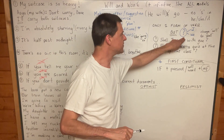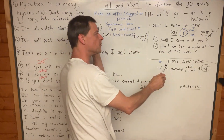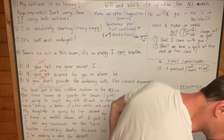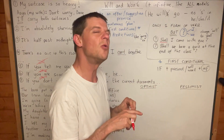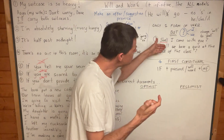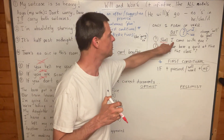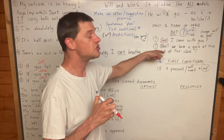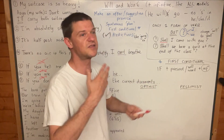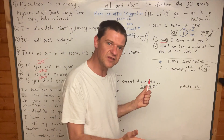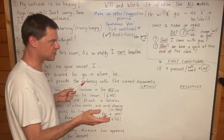With questions using I and we, we don't usually use will or won't — we use shall instead. For example: 'Shall I come with you?' — not 'Will I come with you?' We usually say shall if it's a question with I or with we. For example: 'Shall we have a quiz at the end of the class?' — to revise will and won't.